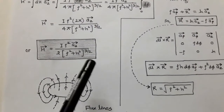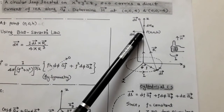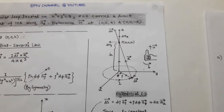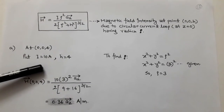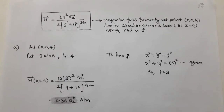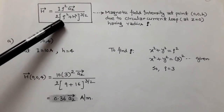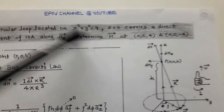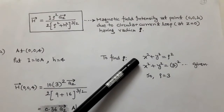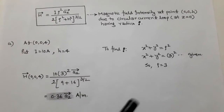Using this formula, we determine H at (0, 0, 4). At this point, h = 4 and the current I = 10 ampere. To find ρ, we use the equation x² + y² = 9 given in the question. This is the equation of a circle: x² + y² = 3², so ρ = 3. We substitute ρ = 3 in place of ρ in the formula.